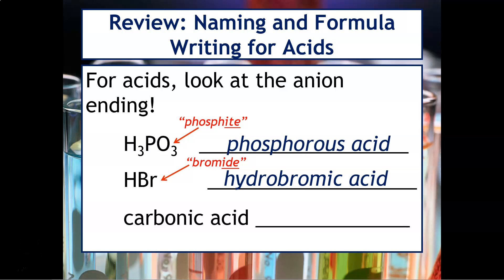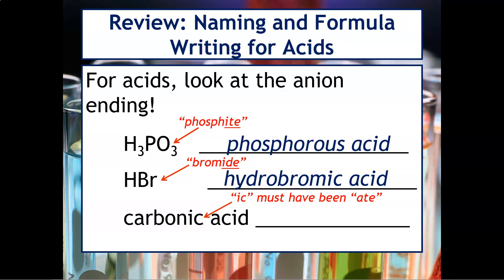And then if we do the opposite, where I give you the name and you have to give me the formula, remember hydrogen is always going to be the cation. Since it's "-ic" here, remember "-ate" becomes "-ic", so "-ic" must have been "-ate". So what we're really looking for is carbonate on the polyatomic ion sheet.